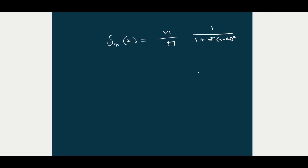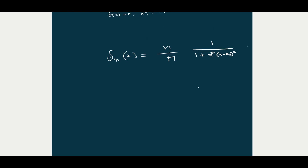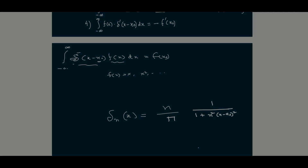As an exercise, try writing a similar Python program for simulating the Dirac delta function using the Cauchy-type approximation, where delta_n(x) = (n/pi) * 1/(1 + n²(x - a0)²). Try to write a similar or improved program for approximating the delta function and check its properties with different functions.